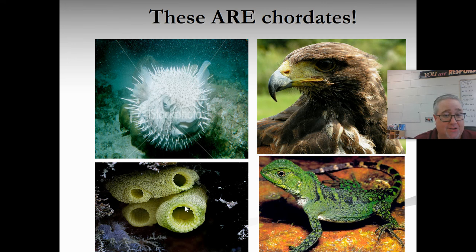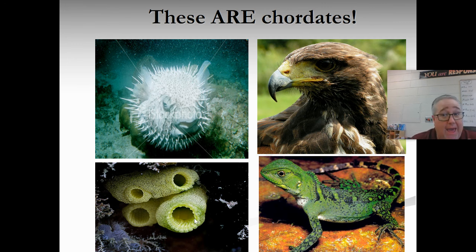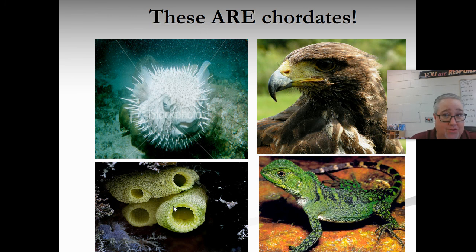Here's an interesting one — the sea squirt. You've probably never seen one; they're small and live in the ocean. In the adult form, they don't have any chordate traits — no backbone, no notochord. But when they're embryos, they're actually mobile and can swim, and they do have the notochord, the dorsal nerve cord, and all chordate traits. Once they form into an adult they lose those traits, but since they have them at some point in their life, we characterize them as chordates.